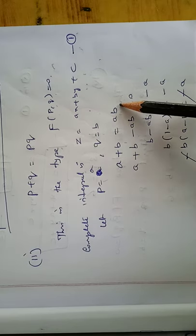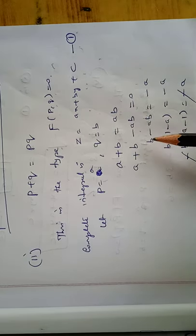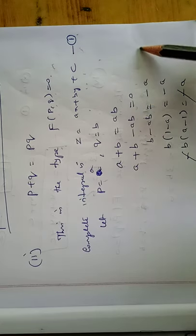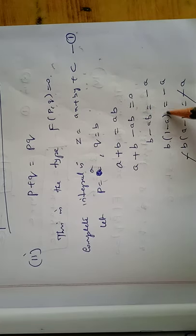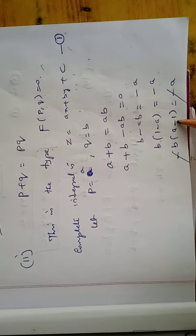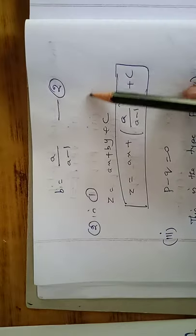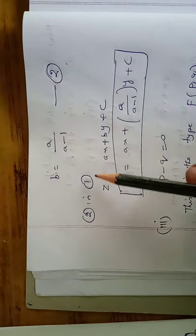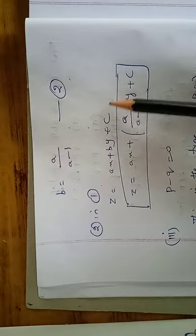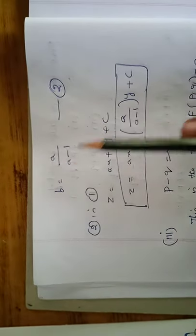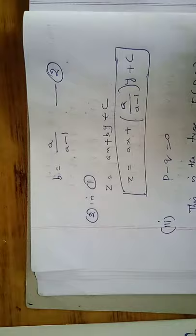From a plus b equal to ab: rearranging, a plus b minus ab equal to 0, so b minus ab equal to minus a, giving b(1 minus a) equal to minus a, and thus b(a minus 1) equal to a. Therefore b equal to a divided by (a minus 1), equation number 2. Substituting into equation 1: z equal to ax plus (a divided by a minus 1)y plus c.